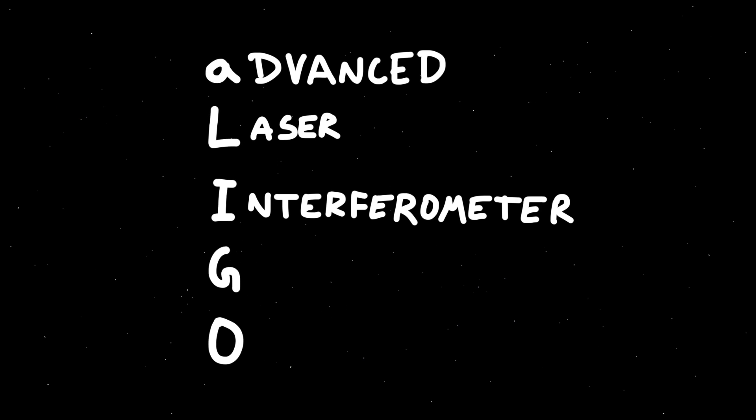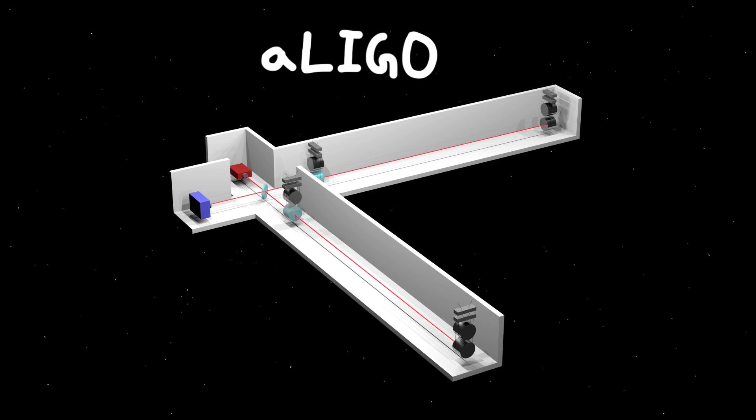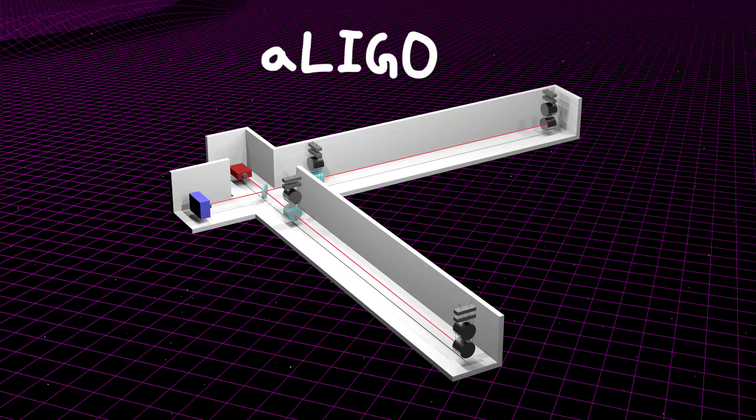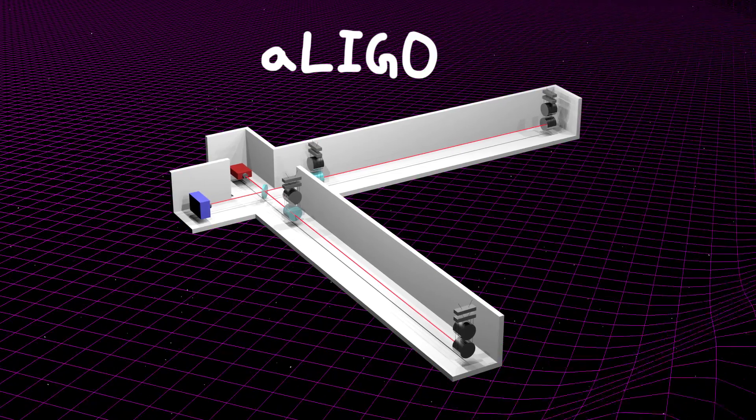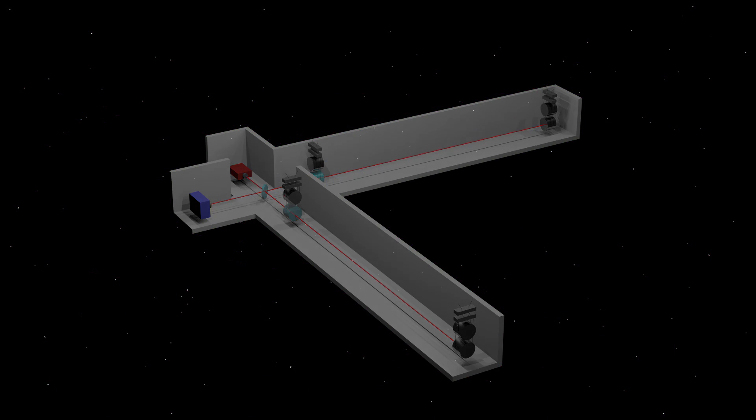ALIGO, the Advanced Laser Interferometer Gravitational Wave Observatory. And back in November 2015, on a Monday morning, LIGO detected the first gravitational wave that humans have ever directly observed. Where they came from and what this means for space science is nothing short of mind-blowing. This is the story.